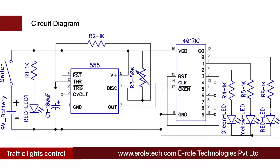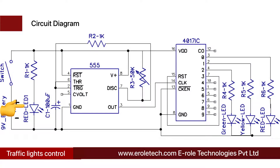Before making the project, we will understand its circuit diagram. This is a 9-volt battery to power up the circuit. This is an on/off switch used to start or stop the project. This is a power supply indication LED, and this is a current limiting resistor to protect the LED from high current and voltage.